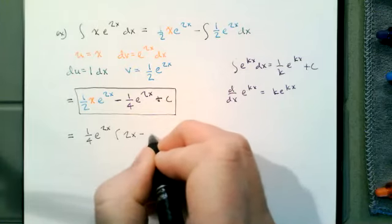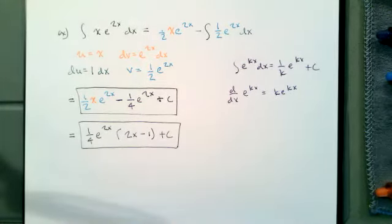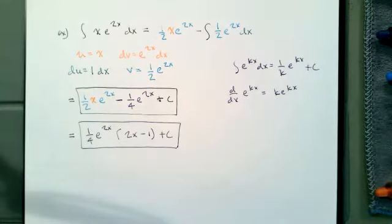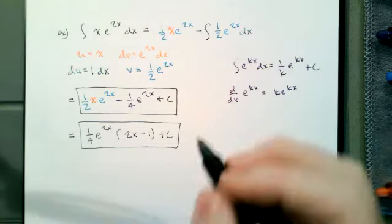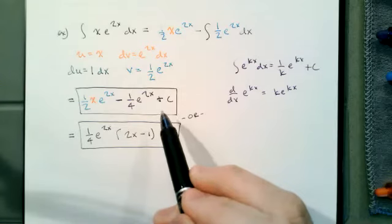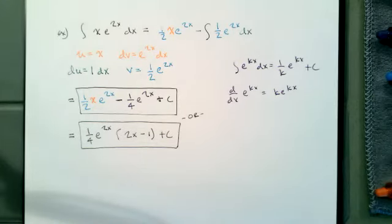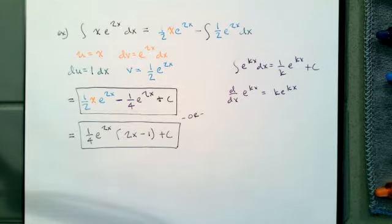Factoring out e to the 2x would leave a 2x minus 1 plus C. It's sometimes more useful to have the exponential multiplied by just one polynomial. Either form is fine, but it's actually better if you stop at the unfactored form, because then it's very clear how you got there from parts. If you jump straight to the factored form without showing the intermediate step, it's obvious you just copied from Wolfram Alpha.